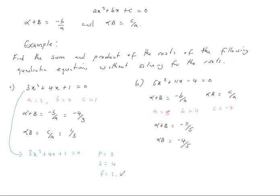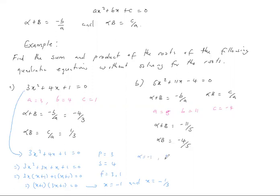The factors are 3 and 1. We write 3x squared plus 3x plus x plus 1 equals zero, giving 3x times x plus 1, plus 1 times x plus 1, so x plus 1 times 3x plus 1 equals zero. The roots are x equals negative 1 and x equals negative 1 over 3. So alpha equals negative 1 and beta equals negative 1 over 3. Then alpha plus beta equals negative 1 plus negative 1 over 3 equals negative 3 minus 1 over 3, which is negative 4 over 3. This matches our formula result of negative b over a.